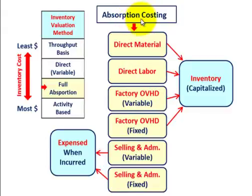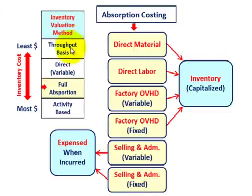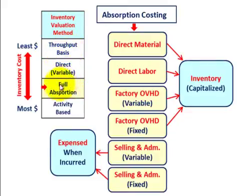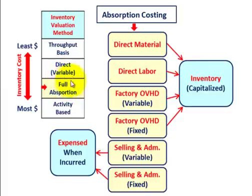What we're going to be going over here is absorption costing — specifically what goes into our inventory costs. When talking about absorption costing, it's one of the inventory evaluation methods, and we really have four of them. In terms of the inventory cost being capitalized, the least amount is based on throughput costing, then direct or variable costing, then full absorption costing. Direct, variable, and full absorption are sort of in between the least and most amount.